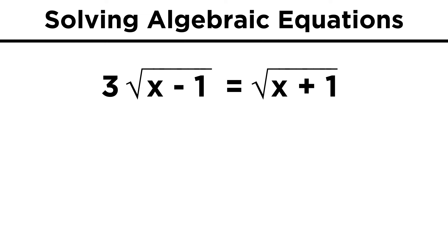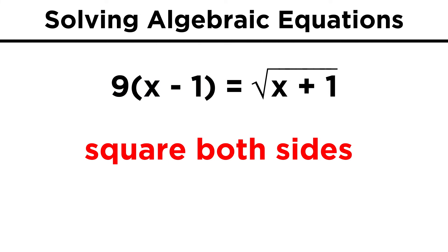Let's do one more: three root x minus one equals root x plus one. Certainly we must get rid of these square roots, so let's square both sides. Don't forget that on the left we square the three and the radical term, so we get nine times the quantity x minus one, and on the right we just lose the radical and get x plus one.